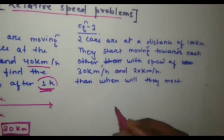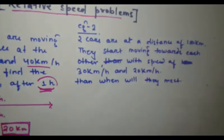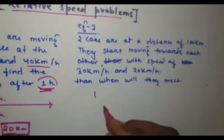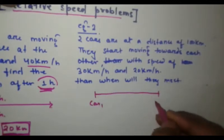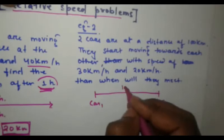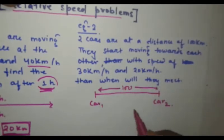In this example, what it is given, two cars are at a distance of 100 km. Let's draw it. Suppose, here is car 1, and car 2 is over here and they are 100 km apart. So, the distance given is 100 km.